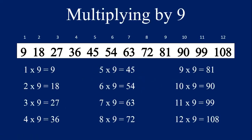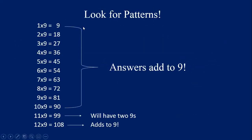Now let's practice multiplying one through 12 by the number nine. Before we begin, here's a quick tip: when you multiply one through ten by the number nine, your answers will add up to nine. For example, one times nine equals nine — zero plus nine is nine. Two times nine is 18 — one plus eight equals nine. Three times nine is 27 — two plus seven equals nine. This works for all equations one through ten multiplied by nine. For eleven times nine, you'll have two nines in the answer, and for twelve times nine, those three digits will add to nine: one plus zero plus eight equals nine.